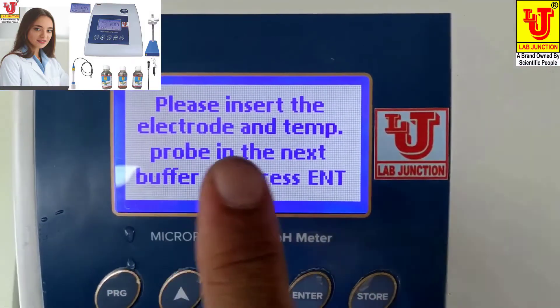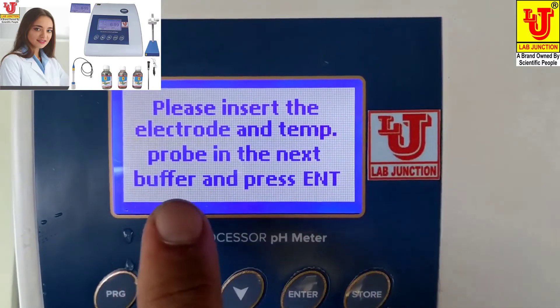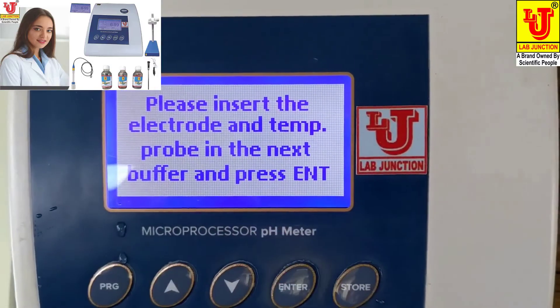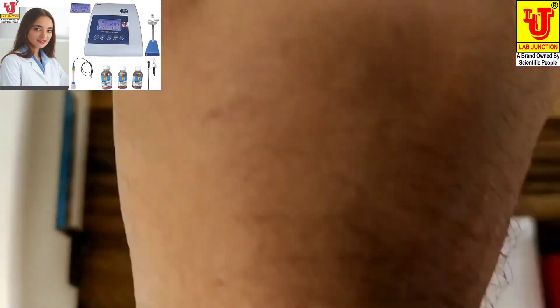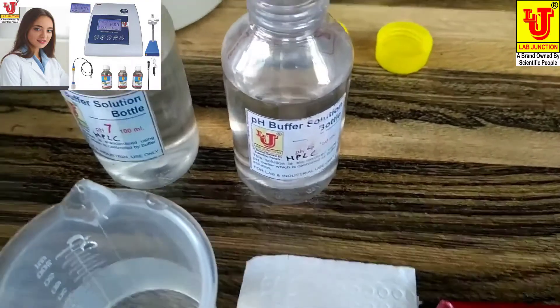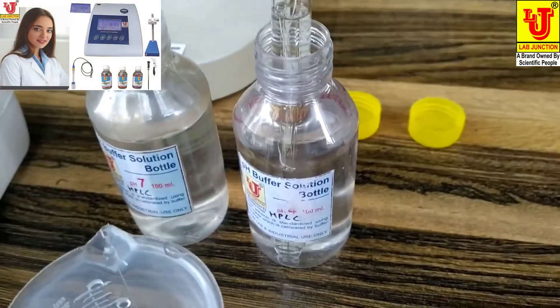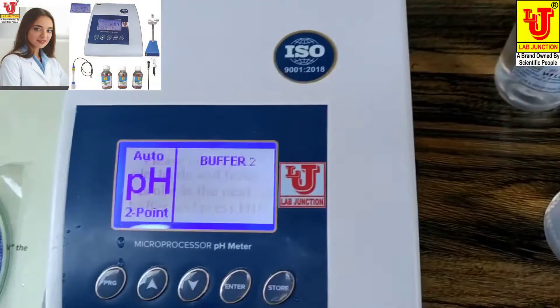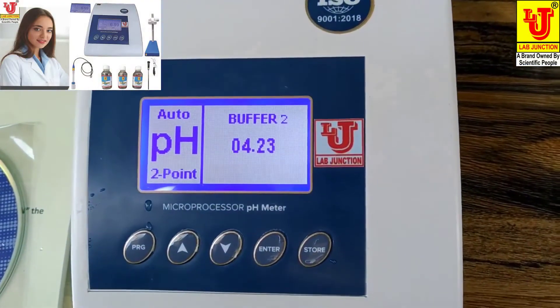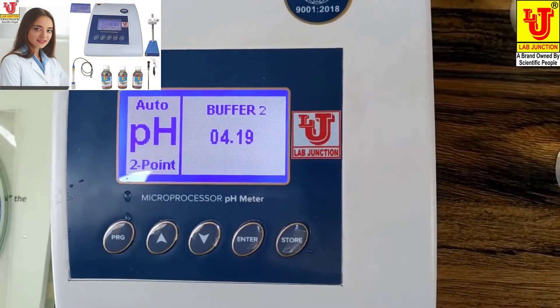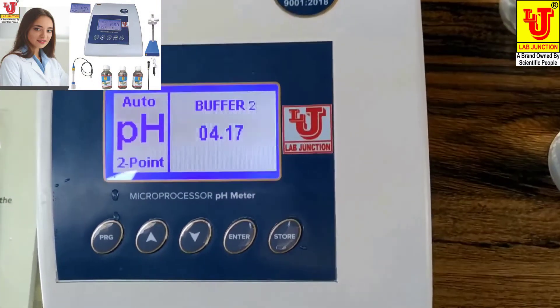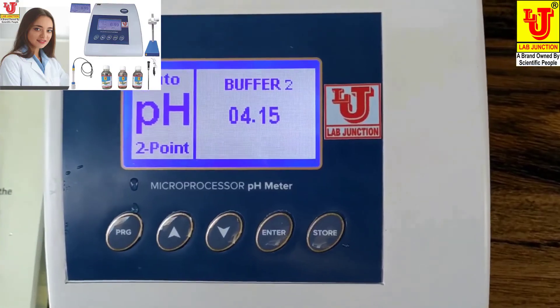Now the instrument can say please insert electrode and temperature probe in the next buffer and press enter. You can dip your pH electrode to pH 4 buffer bottle and press enter. Again, it can achieve its value to 4 pH.